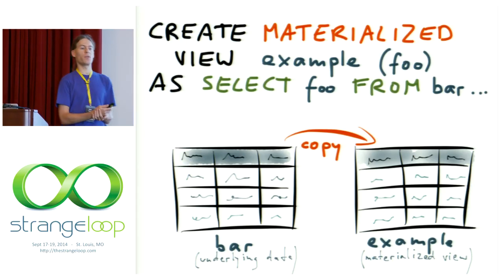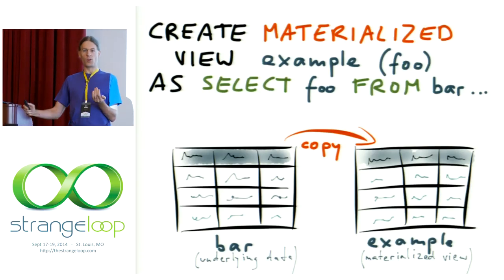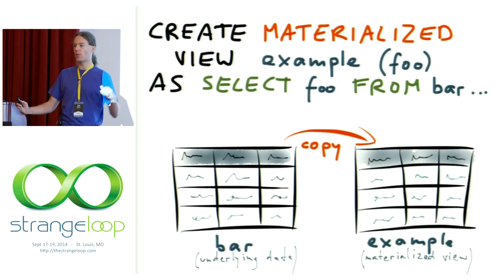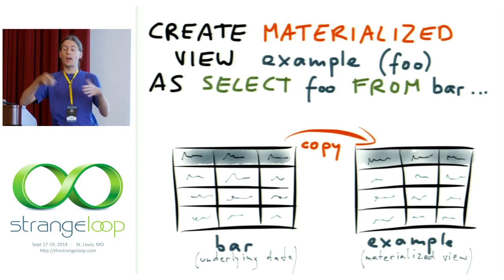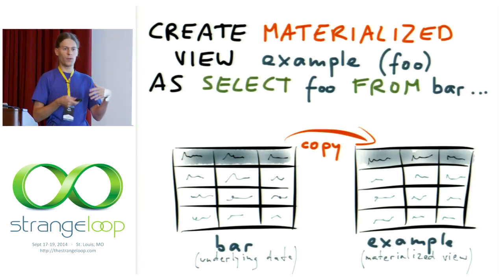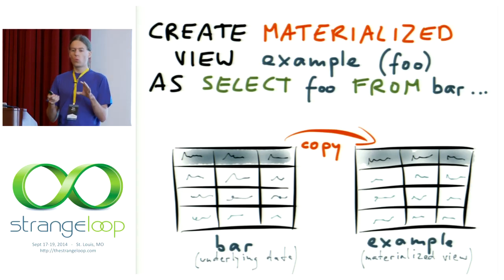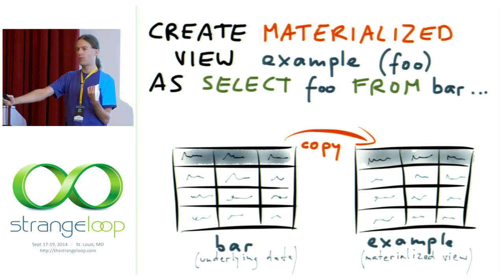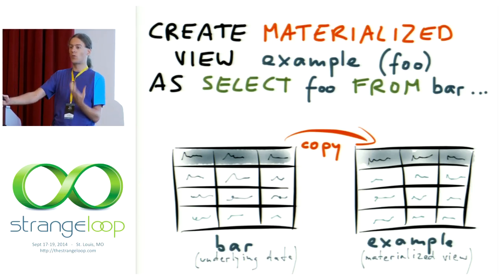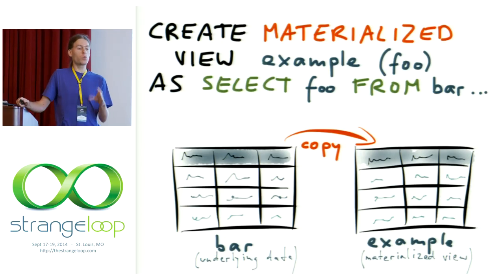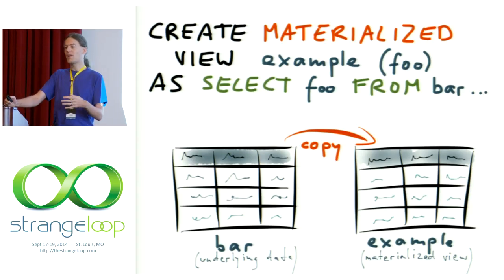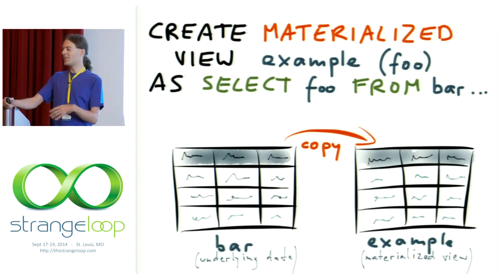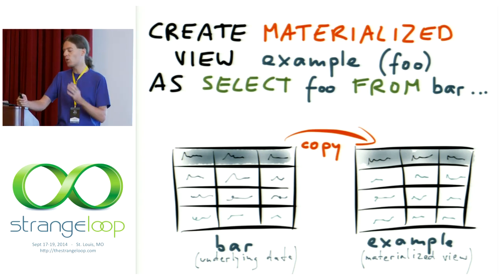The difference is now that the database needs to actually maintain this materialized view. So whenever the underlying base data changes, it has to update the materialized view accordingly. This is actually somewhat like a cache — the main difference is that it's maintained by the database, and an application-level cache gives you more flexibility, like arbitrary application code logic, filtering data. Within limits, you can do this kind of thing in a materialized view — some databases let you run JavaScript stored procedures inside the database, which would let you implement something like an arbitrary application-level cache inside the database. I wouldn't necessarily recommend JavaScript stored procedures as an application platform, but it could be done in principle.